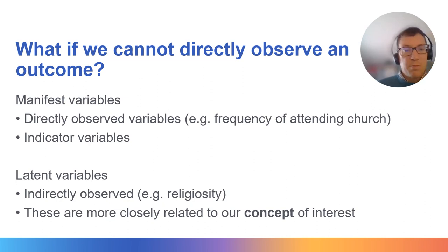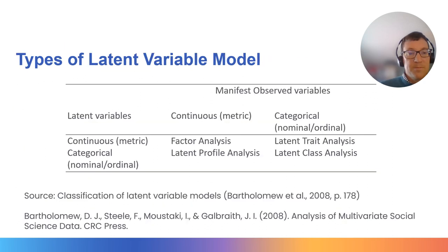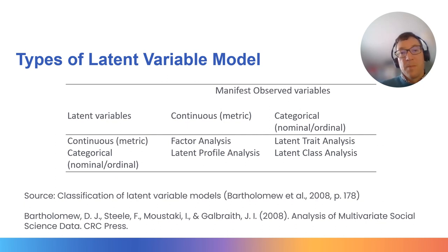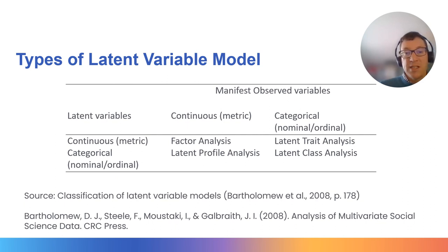Which latent variable model might we choose then? This table summarises different types of latent variable model. For example, if the manifest variables are categorical and the researcher wishes to treat the latent variable as a series of groups or categories, then the appropriate method is latent class analysis.